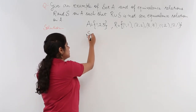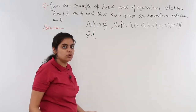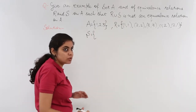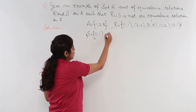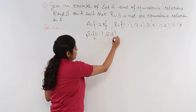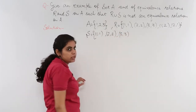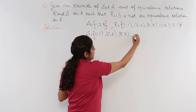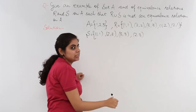Now let's take another equivalence relation S. S also contains (1,1), (2,2), (3,3). To these we add (2,3) and (3,2), making S = {(1,1), (2,2), (3,3), (2,3), (3,2)}.